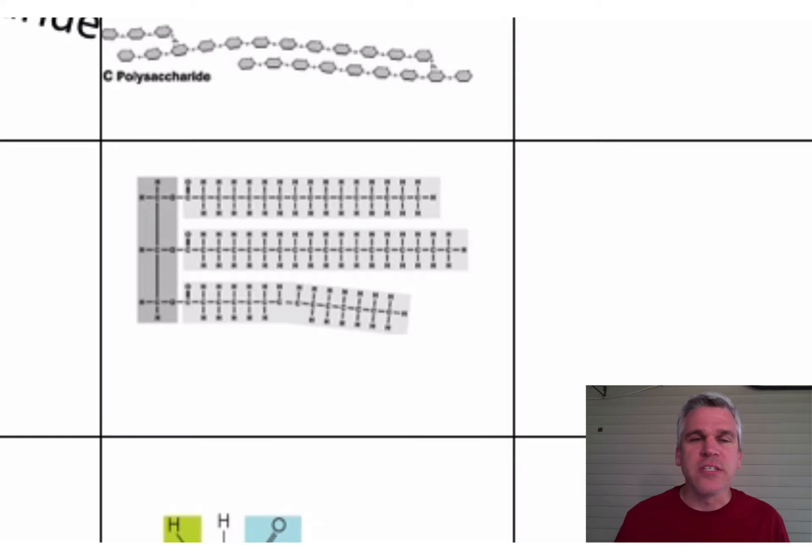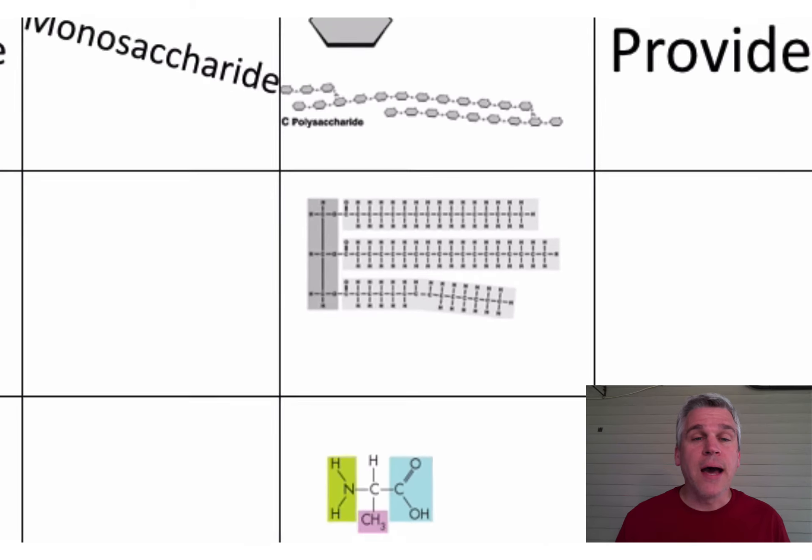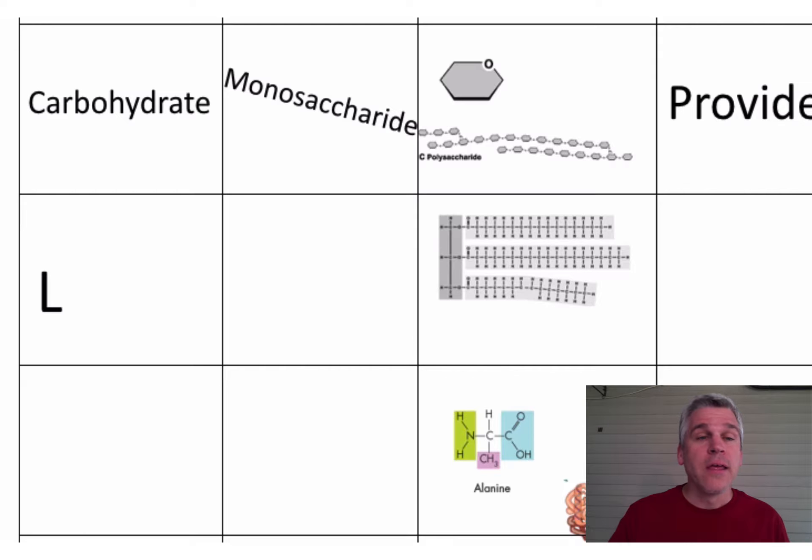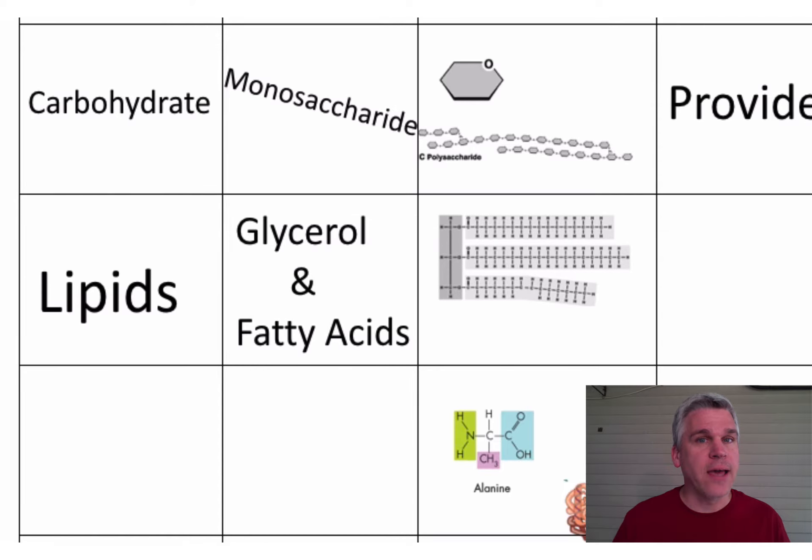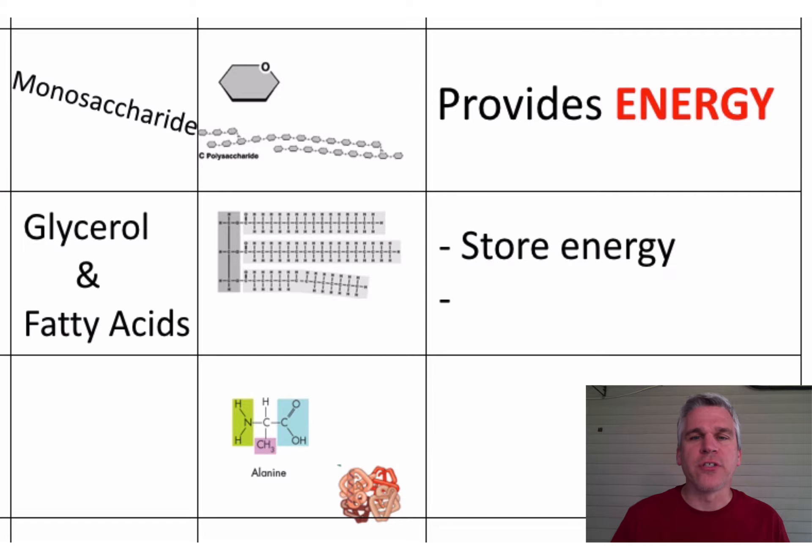The next one you see is a pretty big molecule. There's three molecules attached to one. That is a lipid, or a type of fat. It has two building blocks: glycerol and fatty acids, and it has two different functions. It can help us store energy, but it also acts as a heat insulator for us.